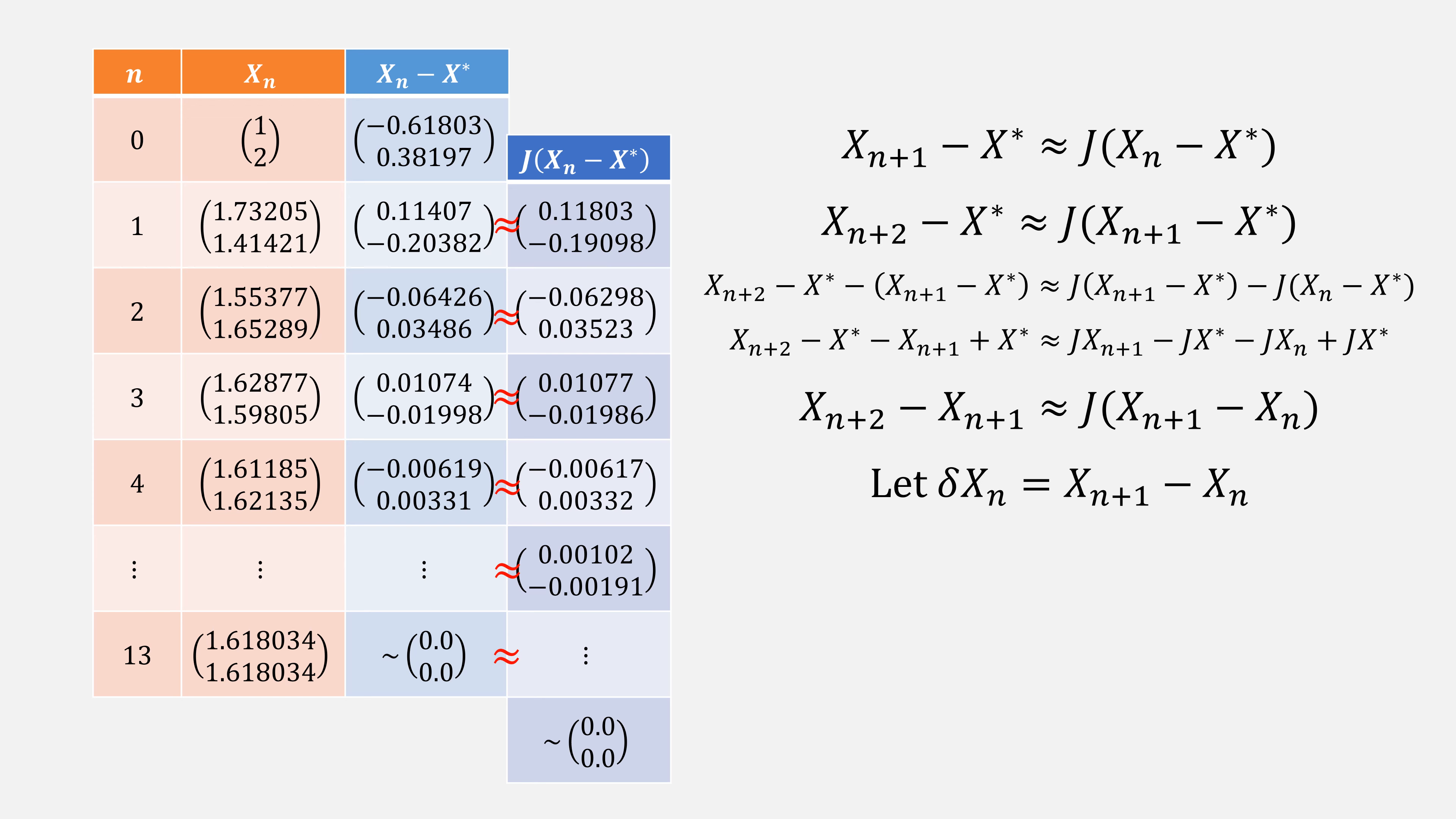If we let little delta x sub n equal to x sub n plus 1 minus x sub n, we can simplify that expression to simply be delta x sub n plus 1 is approximately j times delta x sub n.